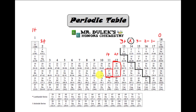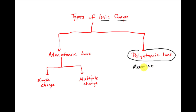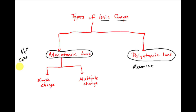Don't forget silver, zinc, and cadmium. When talking about ionic charge, there are two broad categories: polyatomic ions — which you need to memorize — and monatomic ions, which consist of just one atom, like sodium, calcium 2+, fluoride, or sulfide. These fall into single-charge ions and multiple-charge ions.